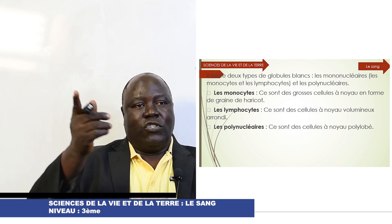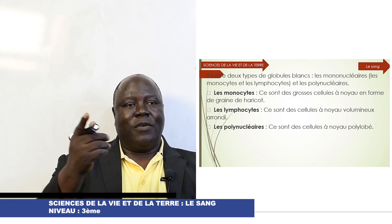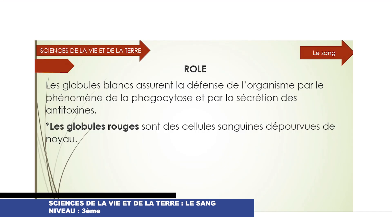Donc, il y a plusieurs lobes, découpés en lobes. Quel est le rôle des globules blancs dans l'organisme ? Les globules blancs assurent la défense de l'organisme par le phénomène de la phagocytose et par la sécrétion des antitoxines.